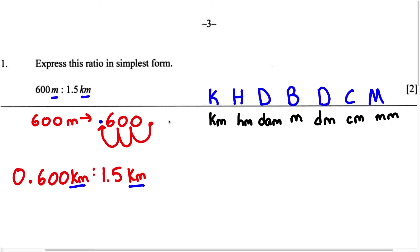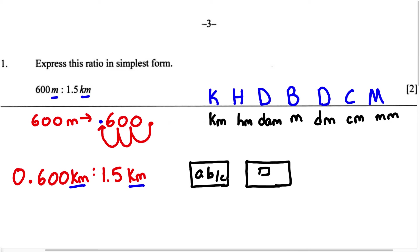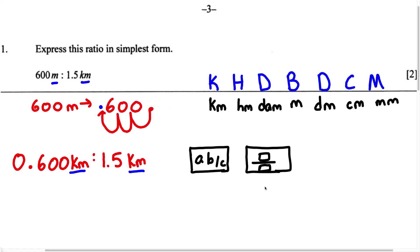Depending on the calculator you have, you're going to press either the ABC key or the fraction key. If you have the ABC key, press 0.600, ABC, 1.5. If you have the fraction key, put 0.600 as the numerator and 1.5 as the denominator. When you press equal, you're going to come up with the answer 2 over 5.